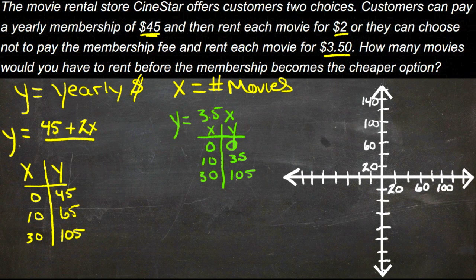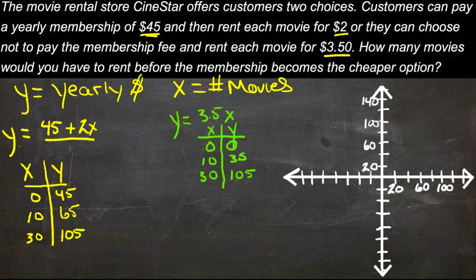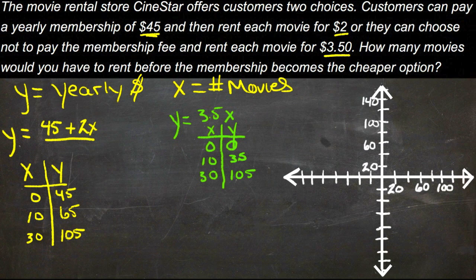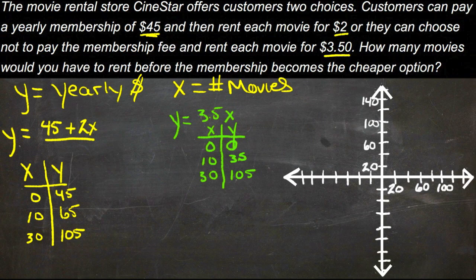If we plug in some values for x, we get the corresponding y values. If we don't rent any movies at all, we pay just the $45 fee. If we rent 10 movies, we get the $45 fee plus $20. And at 30 movies, we get the $45 fee plus $60, for a total of $105.